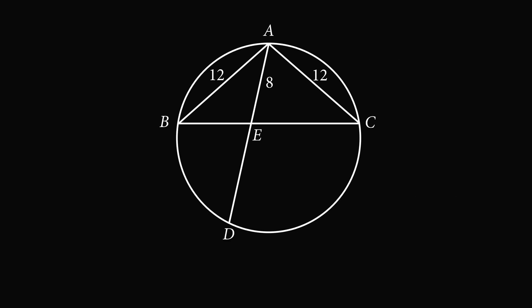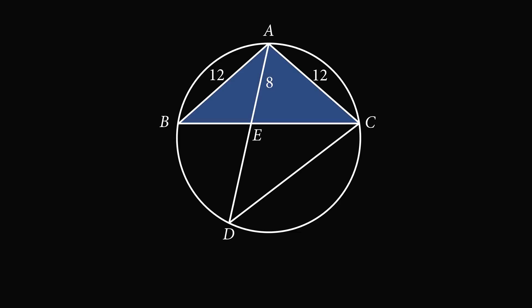To solve this problem, construct the chord DC. Now, triangle ABC is an isosceles triangle with AB equal to AC. Therefore, the angles ABC and ACB are equal to each other, and let their measure be equal to theta.